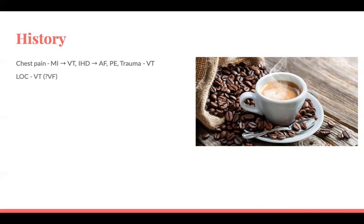Next is loss of consciousness. It's unlikely they'll have ventricular fibrillation and you'll be reviewing them, but it's something to consider — they may have had a run of VT with a reduced level of consciousness and now recovered. Consider that particularly if someone is presenting with loss of consciousness when you go and see them. Shortness of breath — think PE, heart failure as a predisposition to AF, decompensated heart failure, and SVT. Palpitations — ask when they've felt these: during rest, during sleep? If so, they're most likely ventricular ectopics.